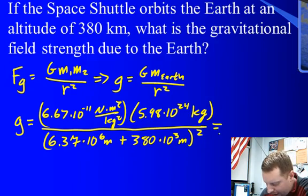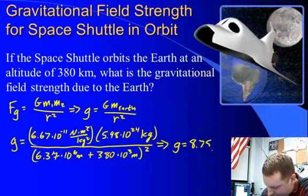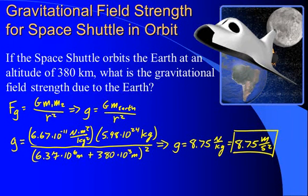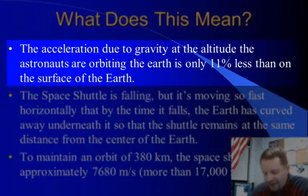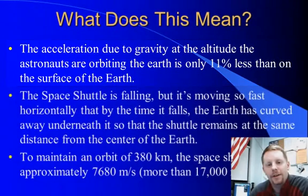And when I plug that into my calculator, I come up with the value for G of about 8.75 newtons per kilogram, which is equivalent to 8.75 meters per second squared. Not a whole lot different than the 9.8 meters per second squared we feel on the surface of the earth. So what does all this really mean? Well, the acceleration due to gravity at the altitude the astronauts are orbiting the earth is really only about 11% less than what we feel on the surface of the earth.